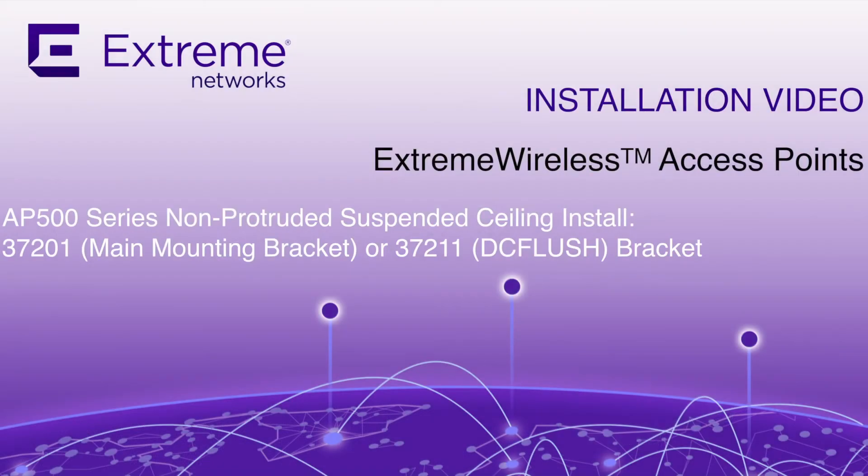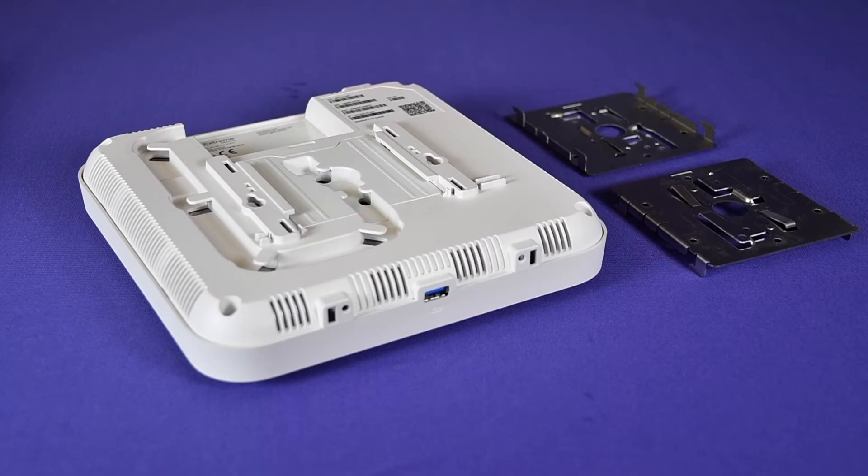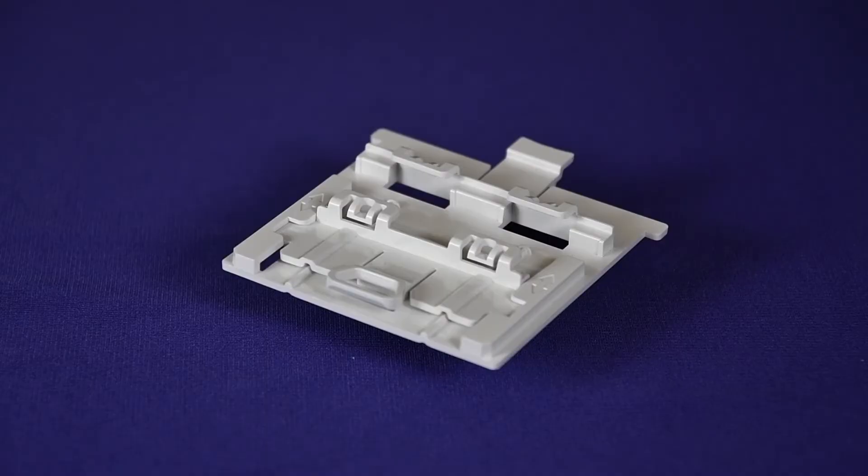In this video, you will learn how to install the indoor access points to a non-protruded suspended ceiling using the 37201 bracket that is shipped with the unit, and 37211, also known as the WSMBI DC flush bracket, that must be purchased separately.